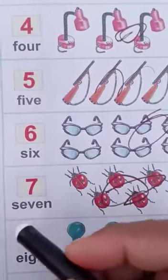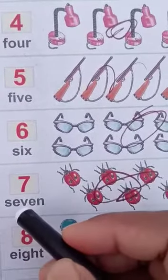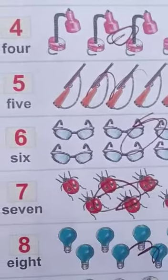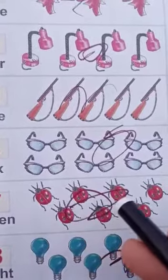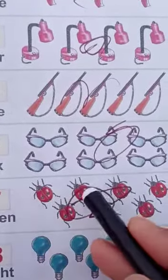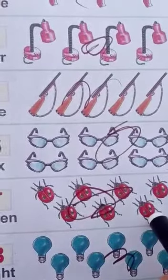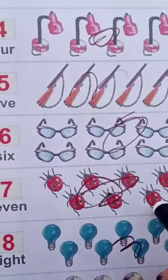Next, seven. S-E-V-E-N, seven. Here are seven insects: one, two, three, four, five, six, seven. Here are seven insects.